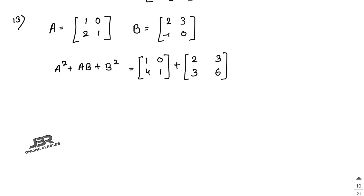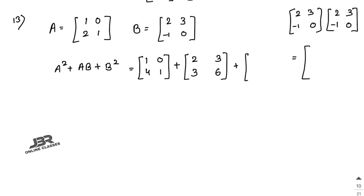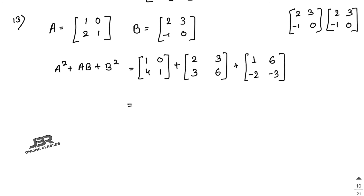Now find B²: multiply B with itself. 2×2 + 3×(−1) = 4 − 3 = 1, 2×3 + 3×0 = 6, (−1)×2 + 0×(−1) = −2, (−1)×3 + 0×0 = −3. So B² = [1, 6; -2, -3]. Now add A² + AB + B²: first element 1 + 2 + 1 = 4, second 0 + 3 + 6 = 9... wait — 1+2+1=4, 0+3+6=9.